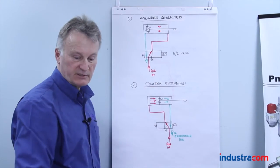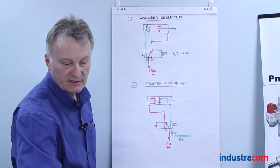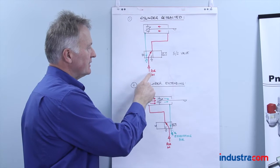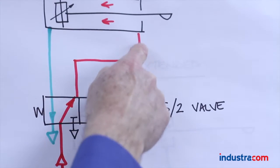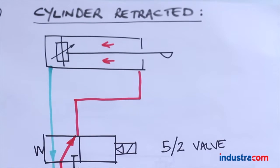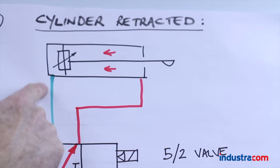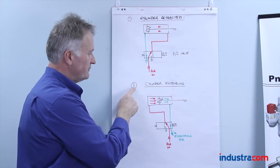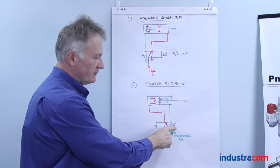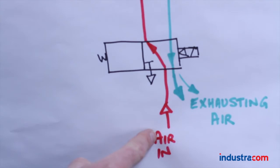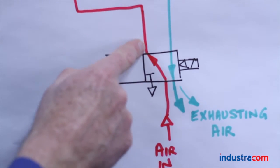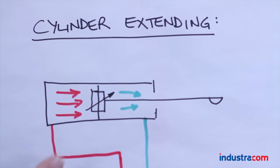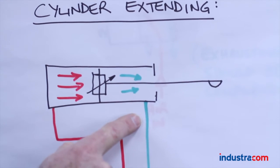Here we have a symbolic version of what I explained previously, physically. Drawing number one shows the cylinder retracted. We have air coming in through this flow path, going into the front end of the cylinder, holding the piston back. The exhausted air came out through this exhaust port of the valve. When the cylinder extends, we energize the solenoid valve — we now have a different flow path, air coming in through this cylinder port into the back of the cylinder, forcing the piston forward, with the exhausting air coming out through the other exhaust port of the valve.